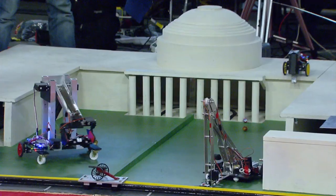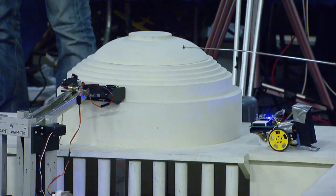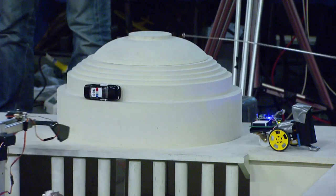How did MIT undergraduates design a robot to lift a small model police car and place it on top of a model of MIT's great dome? Calculus.